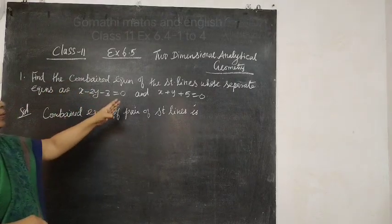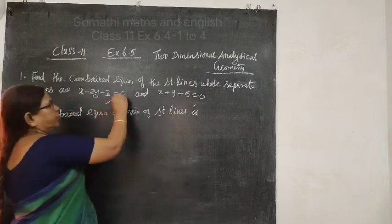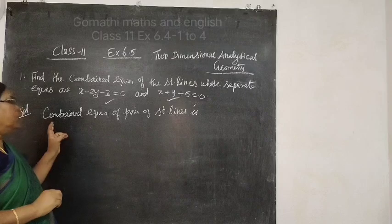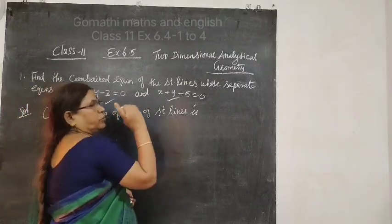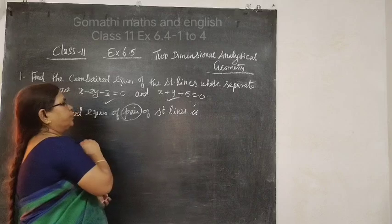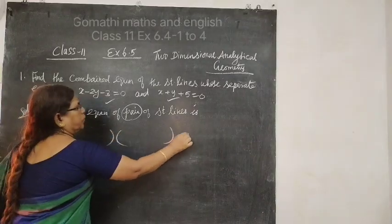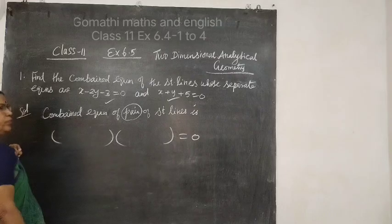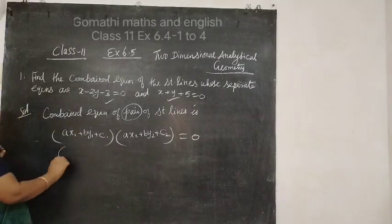Find the combined equation of the straight line whose separate equations are given. We are finding the combined equation of pair of straight lines. So, combined equation: multiply bracket put equal to zero. So the formula is, formula 1 times formula 2 equals 0.